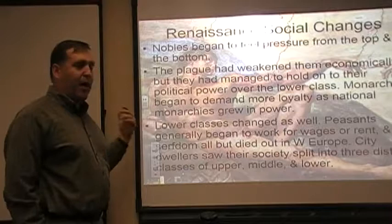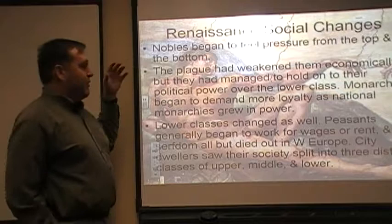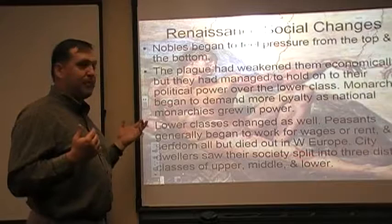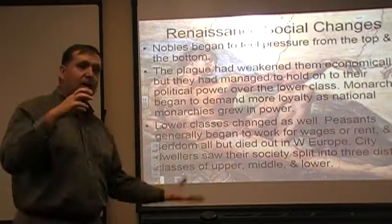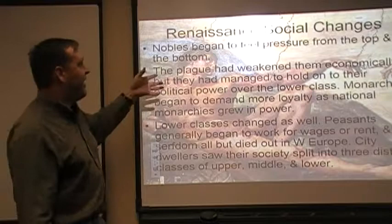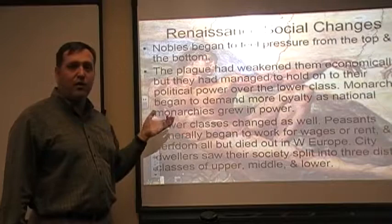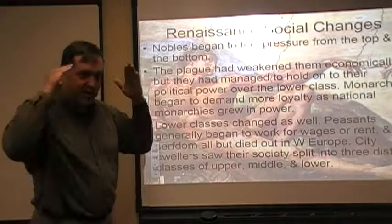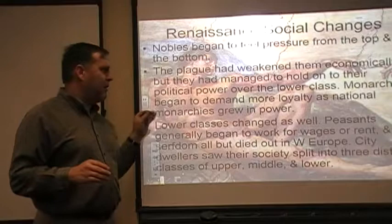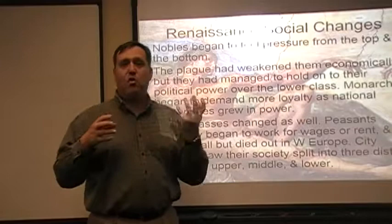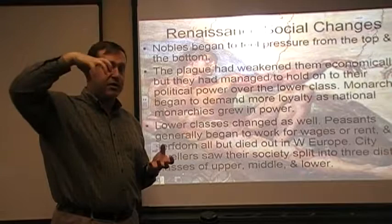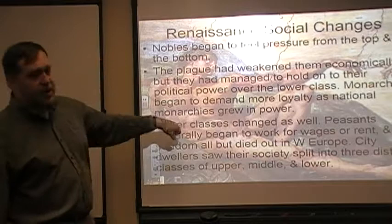When we talk about social changes, the nobility — people close to but not at the top of society — were feeling a lot of pressure. From the top, monarchies were placing pressure on them, and from the bottom, commoners were pushing up as well. The plague had economically weakened the nobility, though they held on to political power over the lower class. Meanwhile, national monarchies were growing in power, demanding more loyalty, so nobles were getting stretched from both directions.